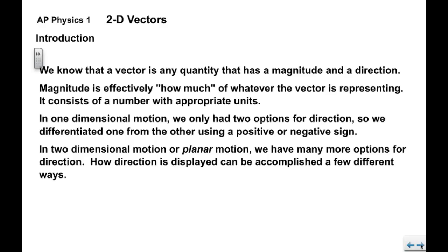Now we already know that a vector is any quantity that has a magnitude and a direction. Magnitude is effectively how much of whatever the vector is representing. Could be how far, could be how fast, how fast the velocity is changing in the case of acceleration. It consists of a number with appropriate units. We're familiar with that already.